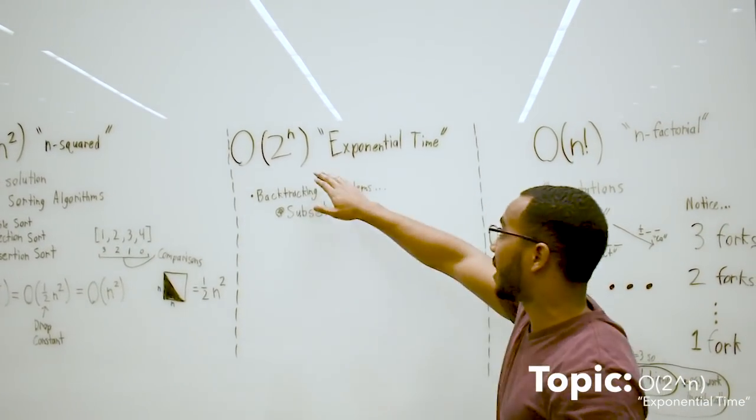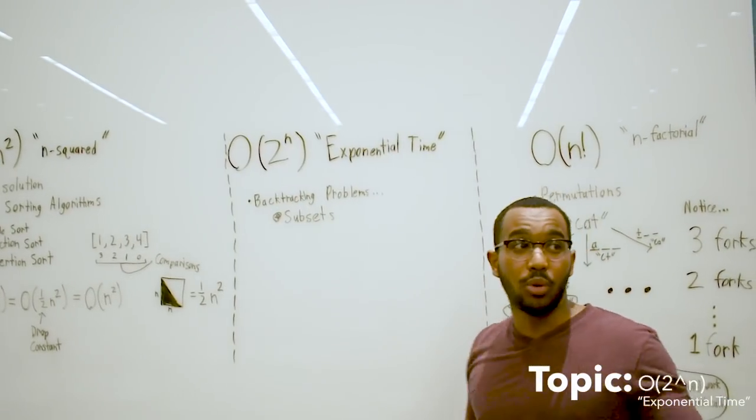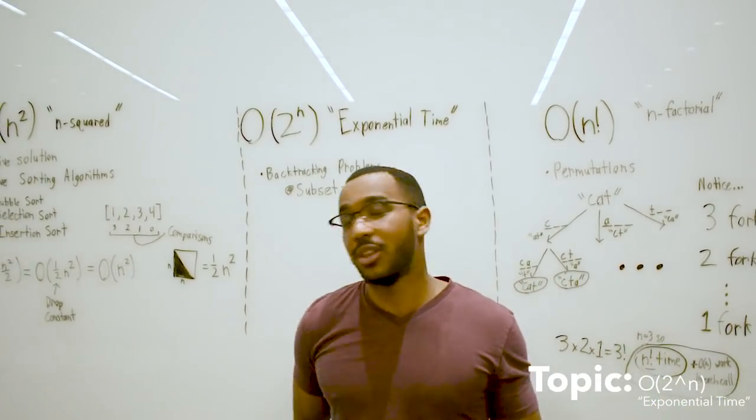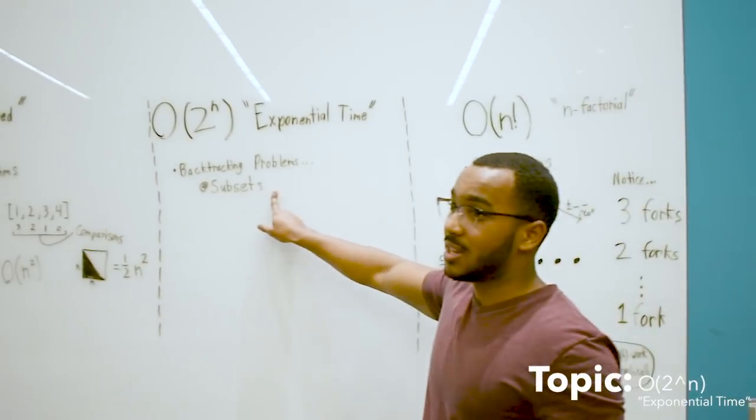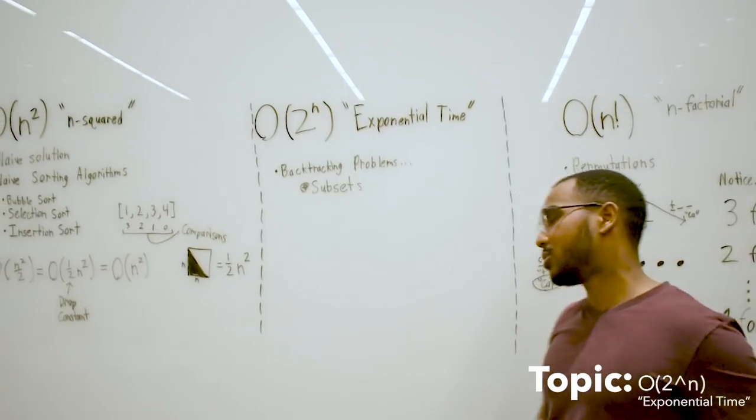For each of those forks, we're creating two forks and we're going to have n levels deep. Problems like this are subsets and different backtracking recursive problems.